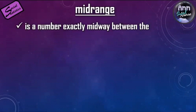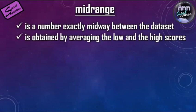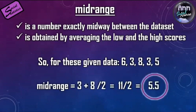Midrange is a number exactly midway between the data set, obtained by averaging the lowest and highest scores. For the given data set 6, 3, 8, 3, 5, you take the lowest value 3, add the highest value 8, and divide by 2. That gives 11 divided by 2, which is 5.5. That is the midrange.